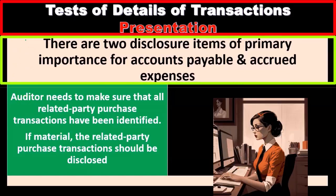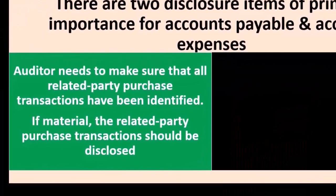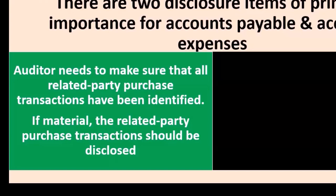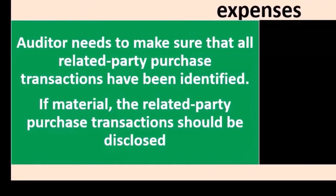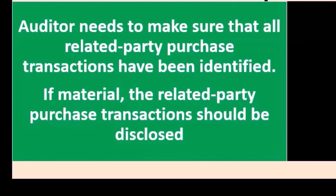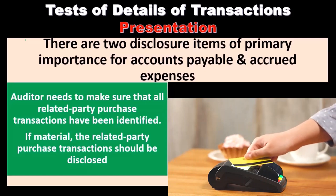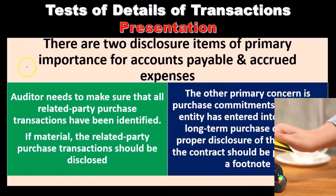Next, we look at the assertion of presentation. There are two disclosure items of primary importance for accounts payable and accrued expenses. First, the auditor needs to make sure that all related party purchase transactions have been identified. With related party transactions — such as those with a subsidiary — there is concern that the transaction is not at arms length, meaning market forces are not helping determine that the transaction is at market prices. Therefore, we want to identify those transactions.